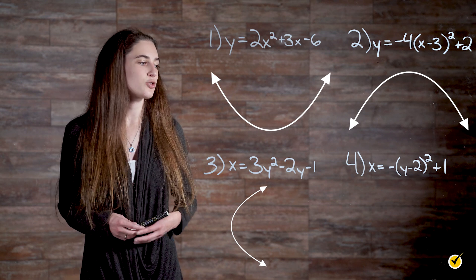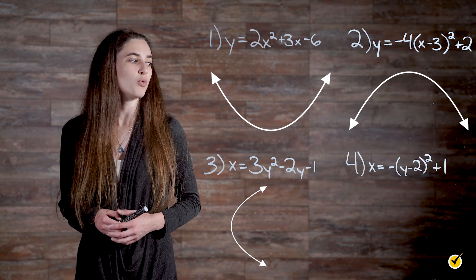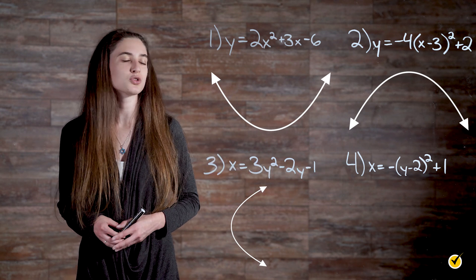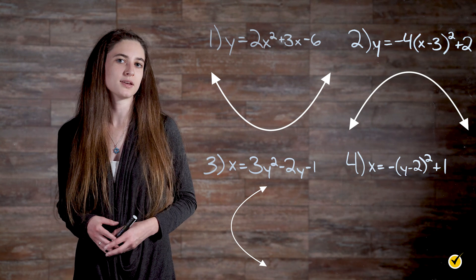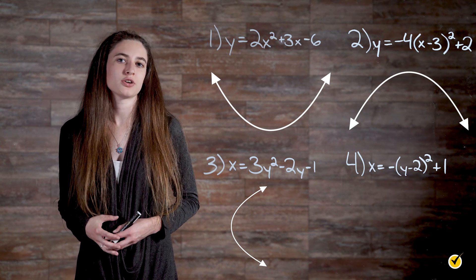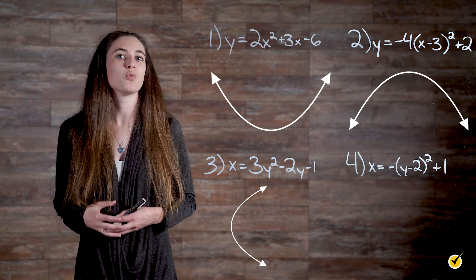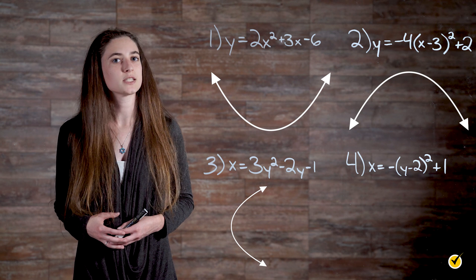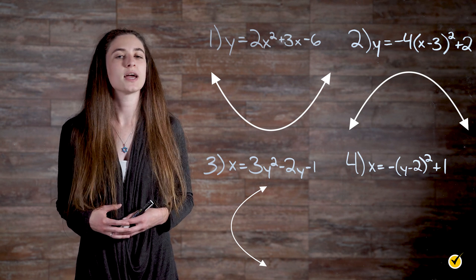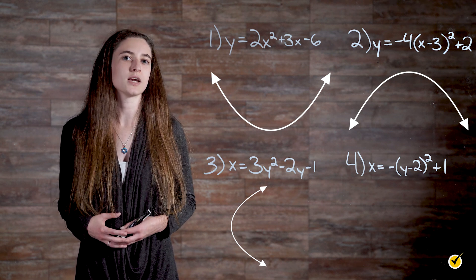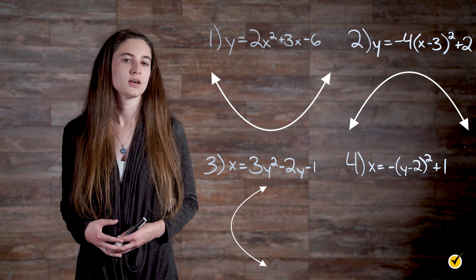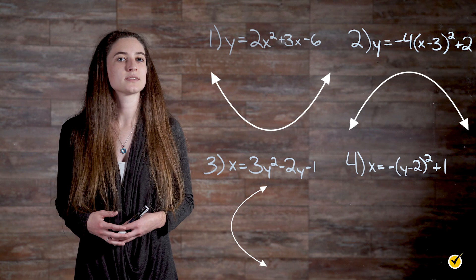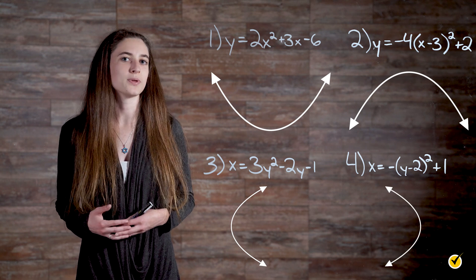Our last equation is x equals negative (y minus 2) squared plus 1. This is a vertex form quadratic equation with the y variable squared, vertex at the ordered pair (1, 2), and a equals negative 1. Because a is less than 0, the parabola will open left. Thanks for watching and happy studying!